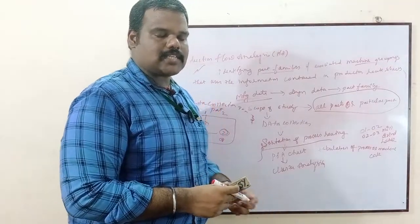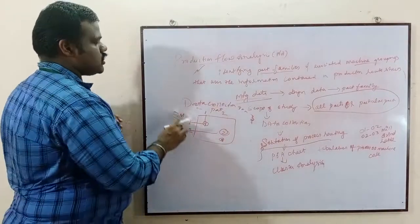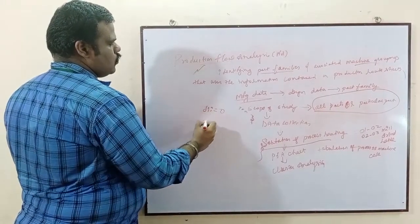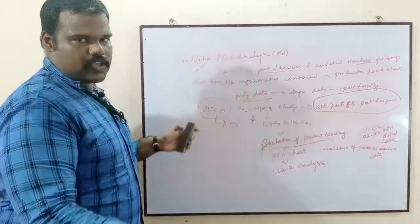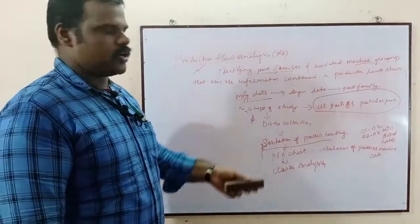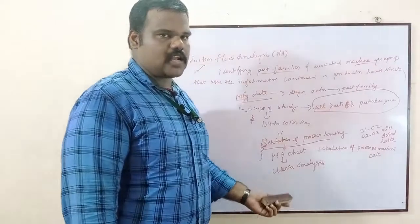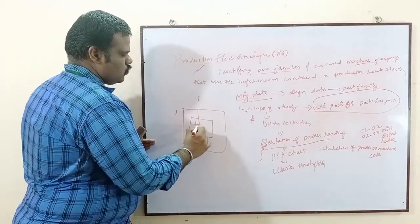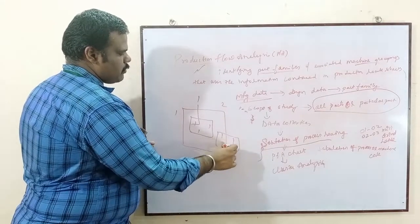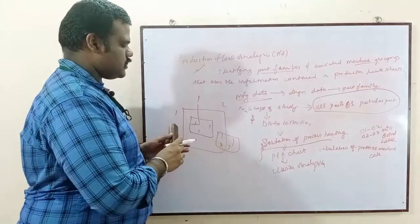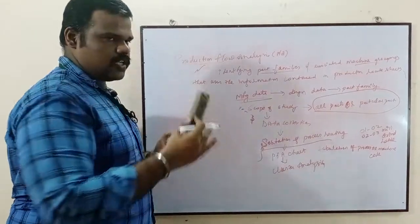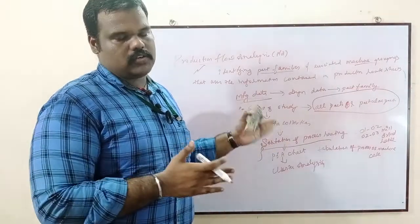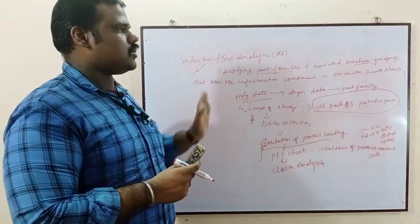Finally, there is cluster analysis. The process flow chart is also called machine indices — if the machine index is 0, the machine count is 0, which you can find in the process flow chart. Cluster analysis means regrouping the data taken from the PFA chart. For example, if one machine can do the job of machine number 2, that is regrouping — that is cluster analysis.